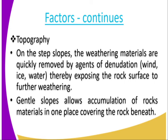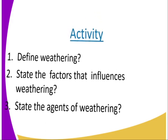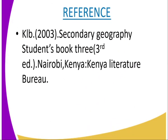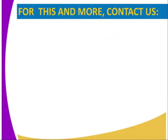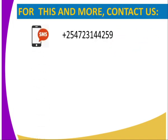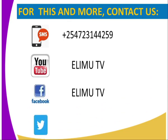Activity: Number one, define weathering. Number two, state the factors that influence weathering. Number three, state the agents of weathering. For more information, you can visit the KRB 2003 Secondary Geography Student Book Three. You can also reach us through SMS, YouTube, Facebook, or Twitter. Stay tuned to RNTV. Thank you.